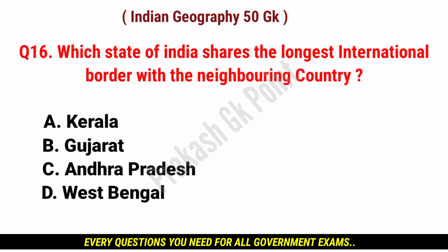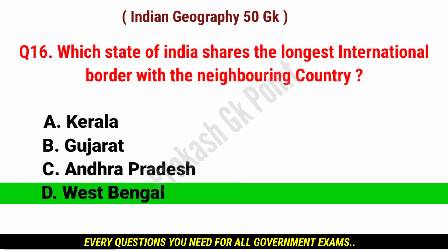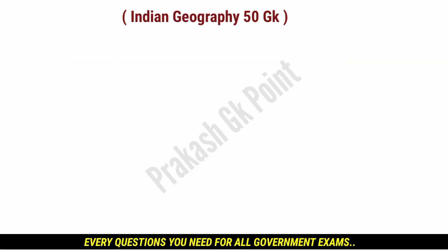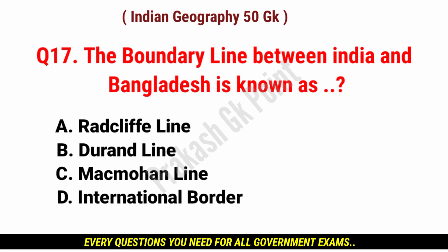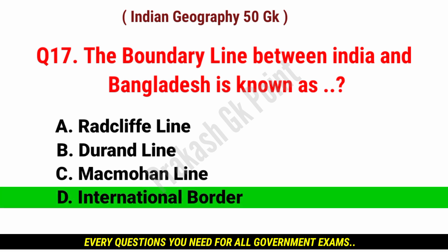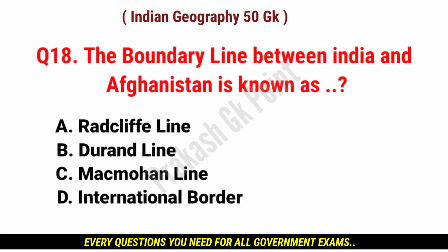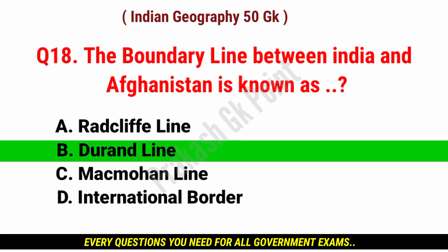Which state of India shares the longest international border with a neighboring country? Answer: option D, West Bengal. The boundary line between India and Bangladesh is known as? Answer: option D, International Border. The boundary line between India and Afghanistan is known as? Answer: option B, Durand Line.